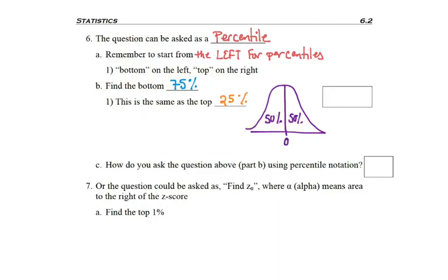If I'm trying to find the bottom 75%, then I'm going to go 50% to the middle and then a little bit further past that. My z-score is somewhere to the right of zero, so it's going to be a positive number. I've got 75% on the left and 25% on the right. The bottom 75% shares a wall with the top 25%. That 25% is from the complement - 1 minus 75 gives me 25%.